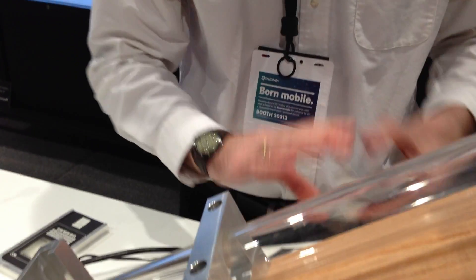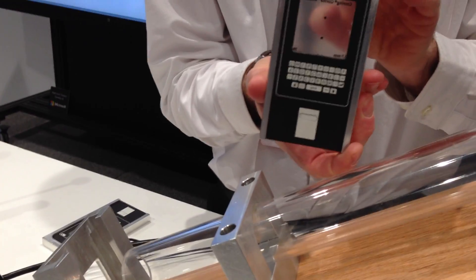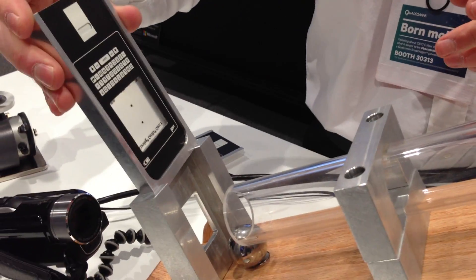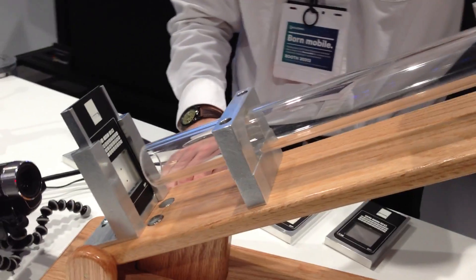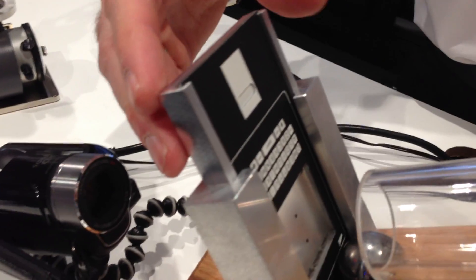So we'll do the same thing with Gorilla Glass 3. Again, this has a 7-Newton scratch in it, same as what I was describing earlier. I'm going to go ahead and impact this. See, it's still intact.